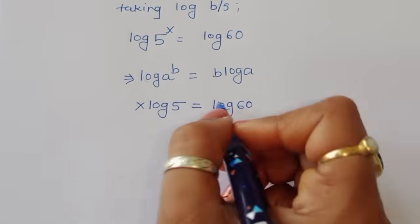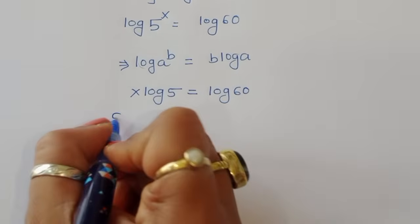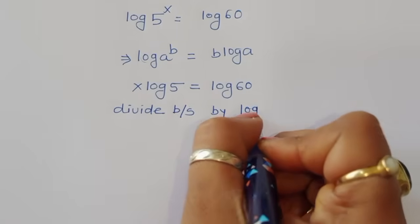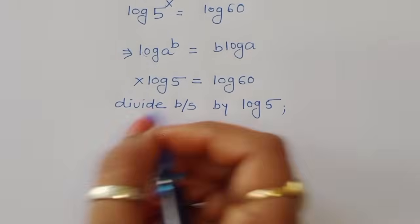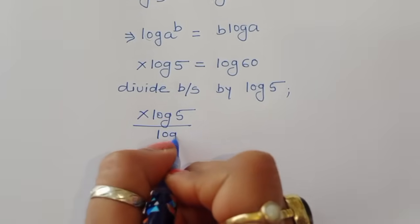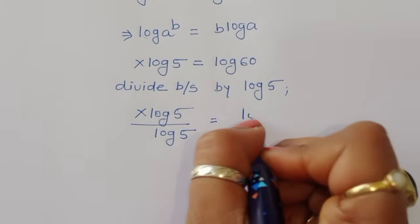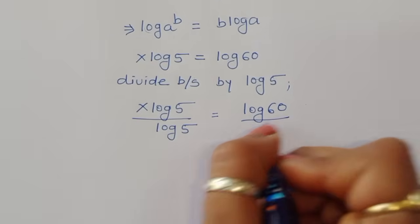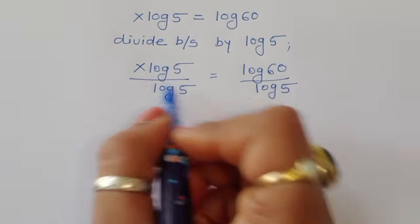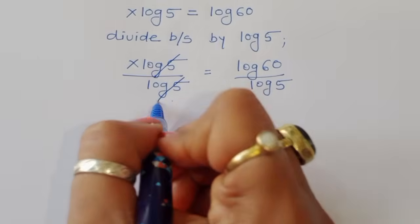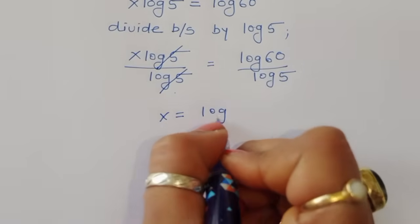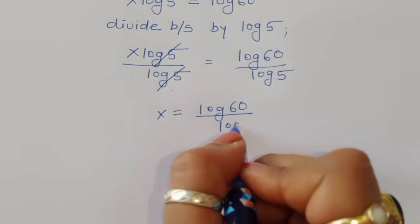To find the value of x, we divide both sides by log of 5. Then x times log of 5 divided by log of 5 equals log of 60 divided by log of 5. Log of 5 cancels, giving us x is equal to log of 60 divided by log of 5.